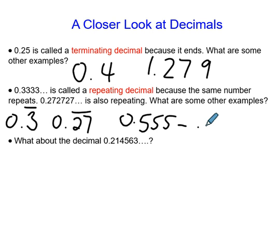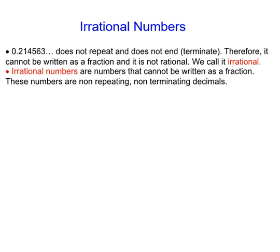No. Does it repeat? No. So what do we do with it? That's called an irrational number. Irrational numbers don't repeat and don't end. Some examples you may have seen are things like pi.